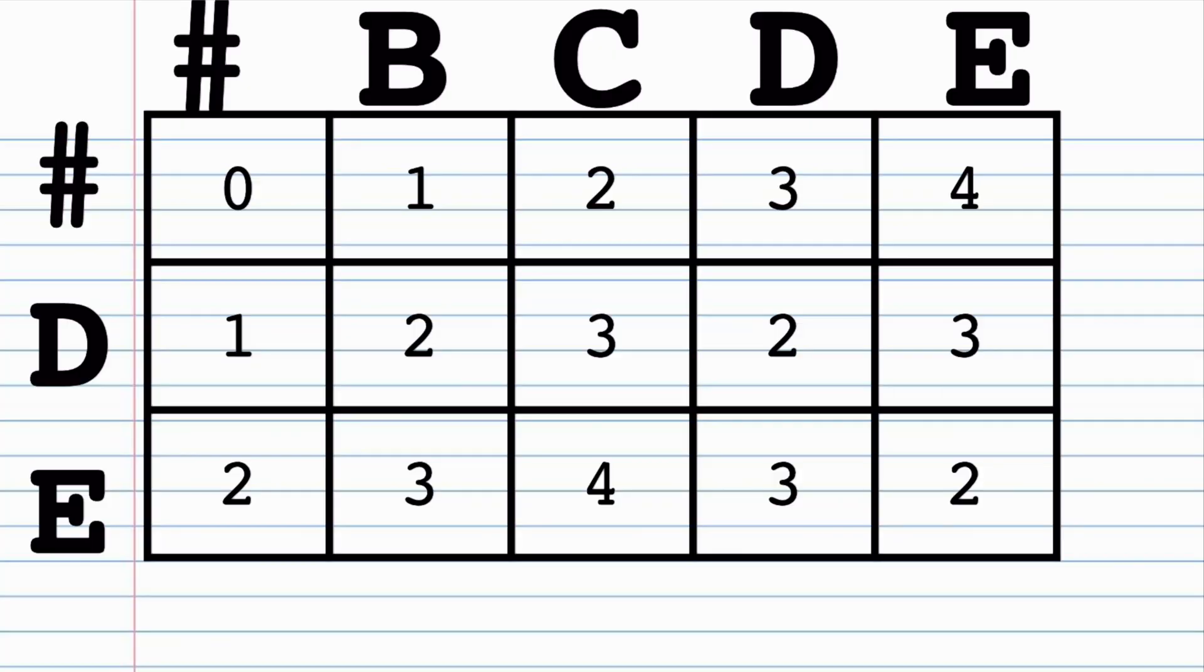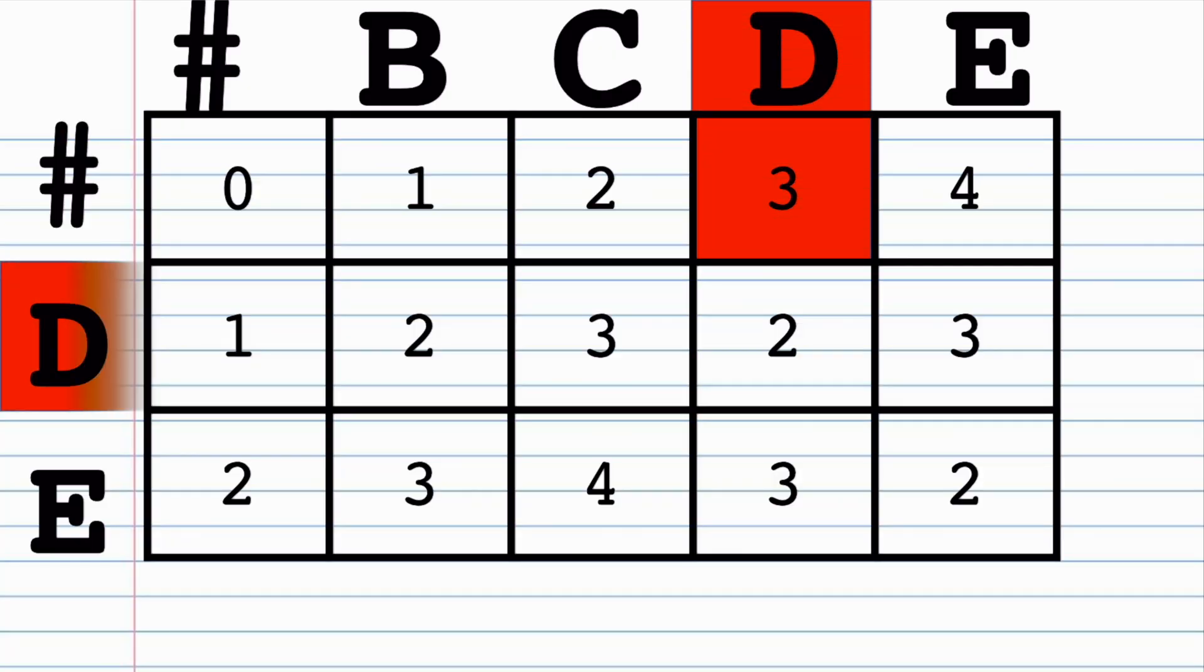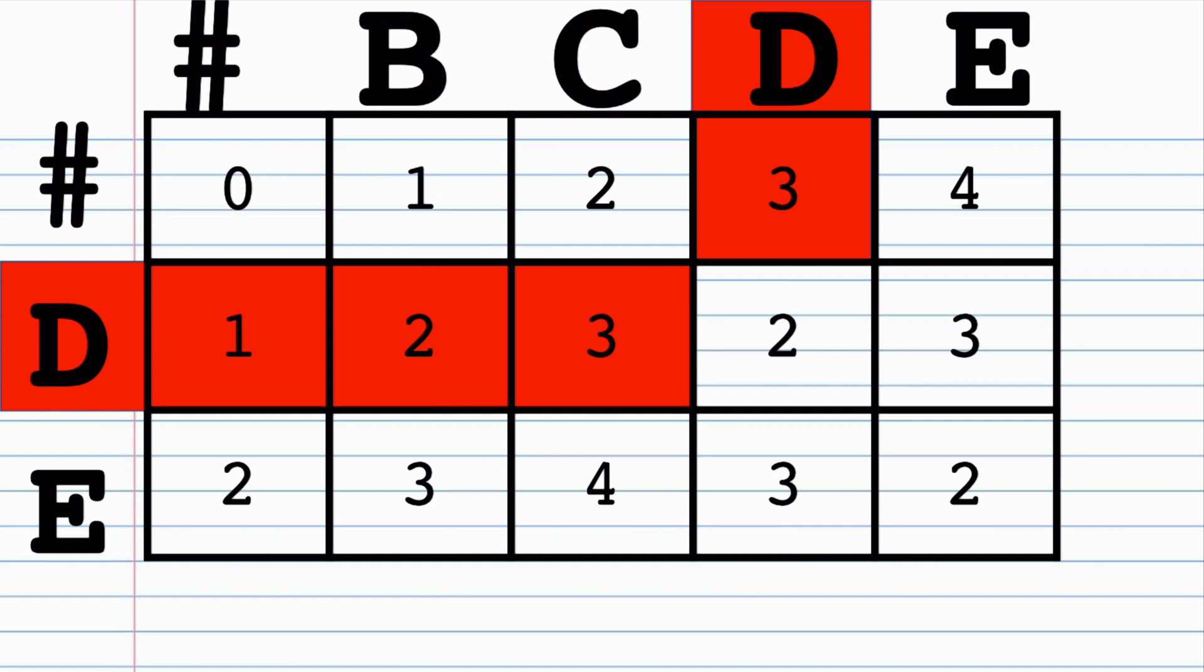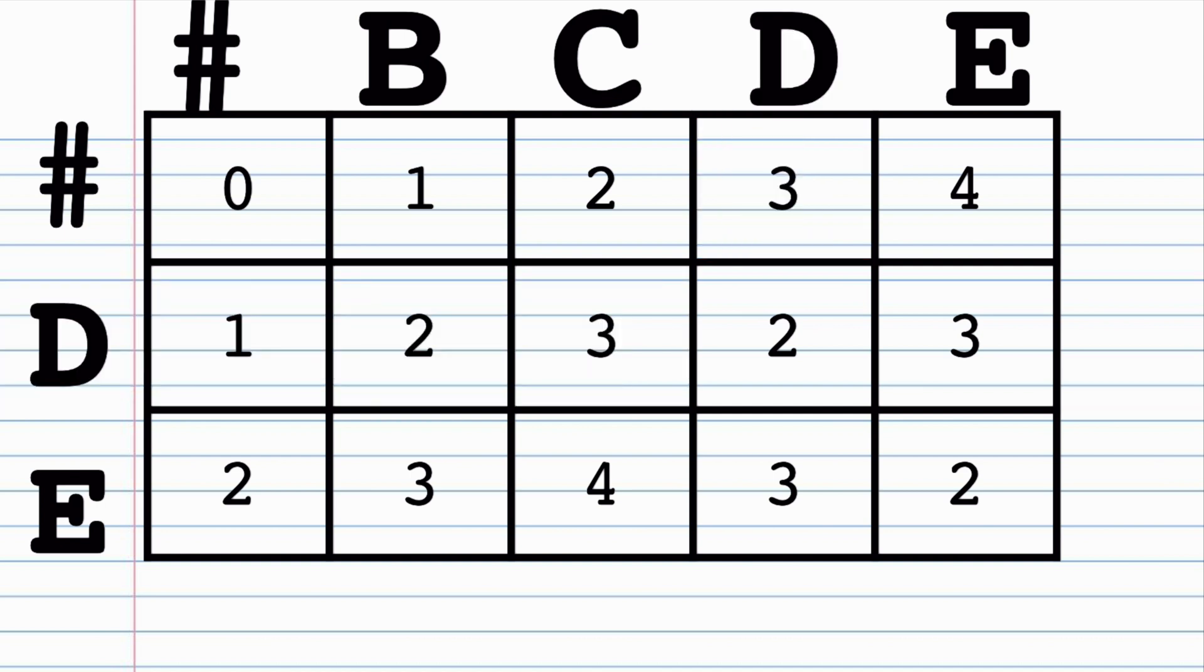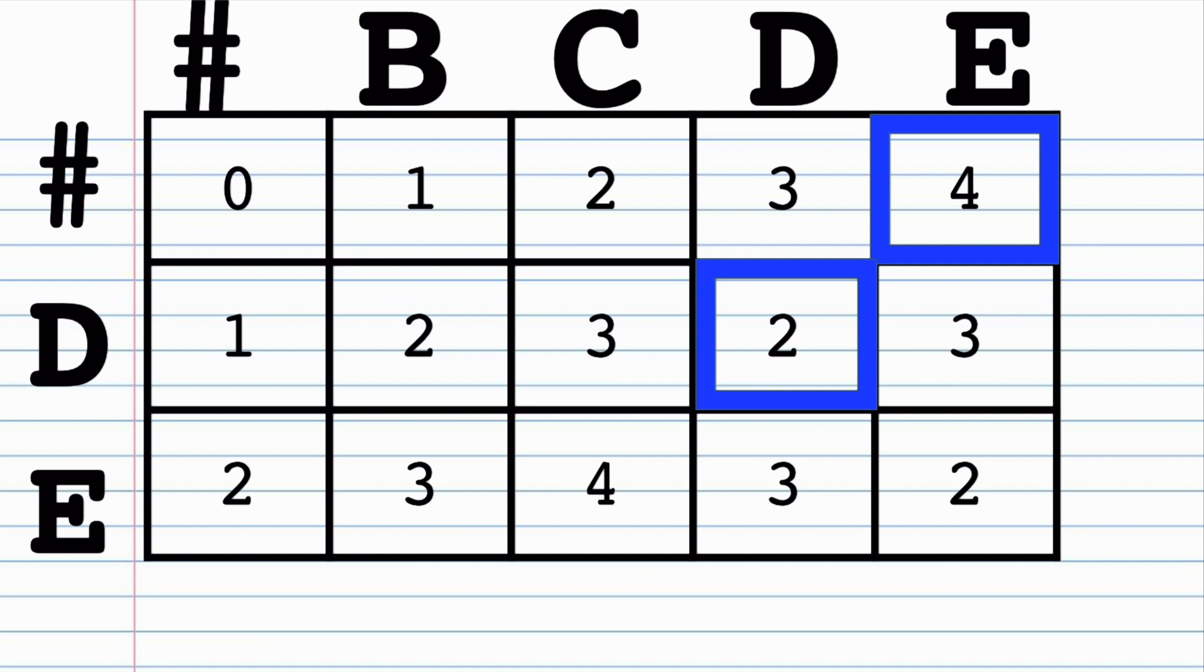This works every time the letters in the source are different from the letters in the target. But what about the other case where the letters in the source and the letter in the target are the same? Well, that's the case with this one. We have a d and a d. Well, if you think about it, since these two letters are the same, we don't need to do an addition or subtraction. Both are already a d. Therefore, this does not add any distance. We simply copy the value that is diagonal to it. So that would be two in this case. Last, let's do one more. Let's look at this three. Because d and e are not the same, we look to the two values. So we take the minimum of two and four, which is two. And then we add one to get three.